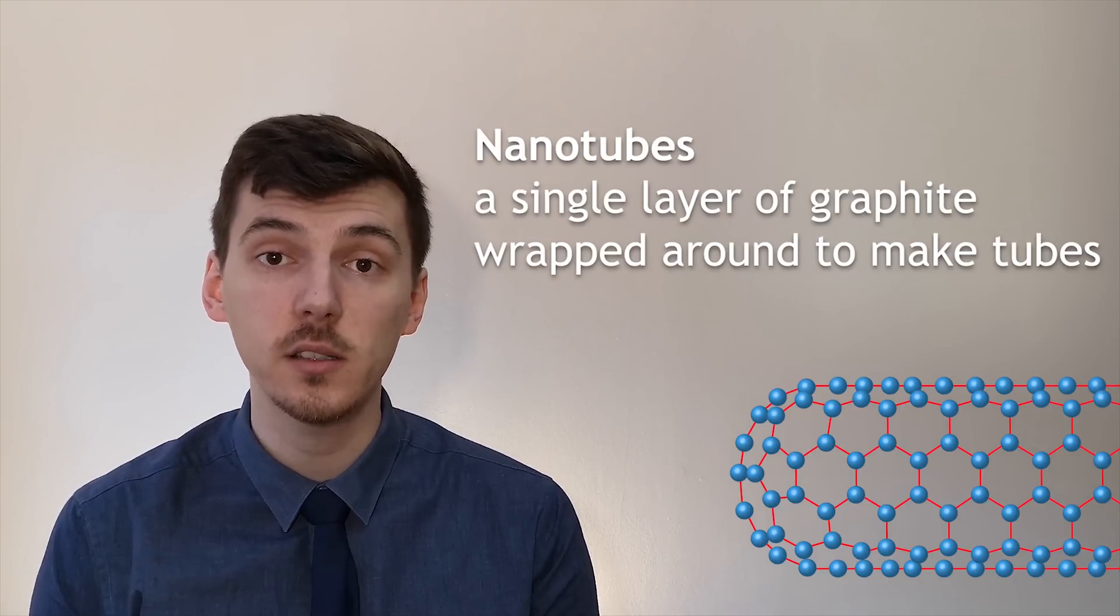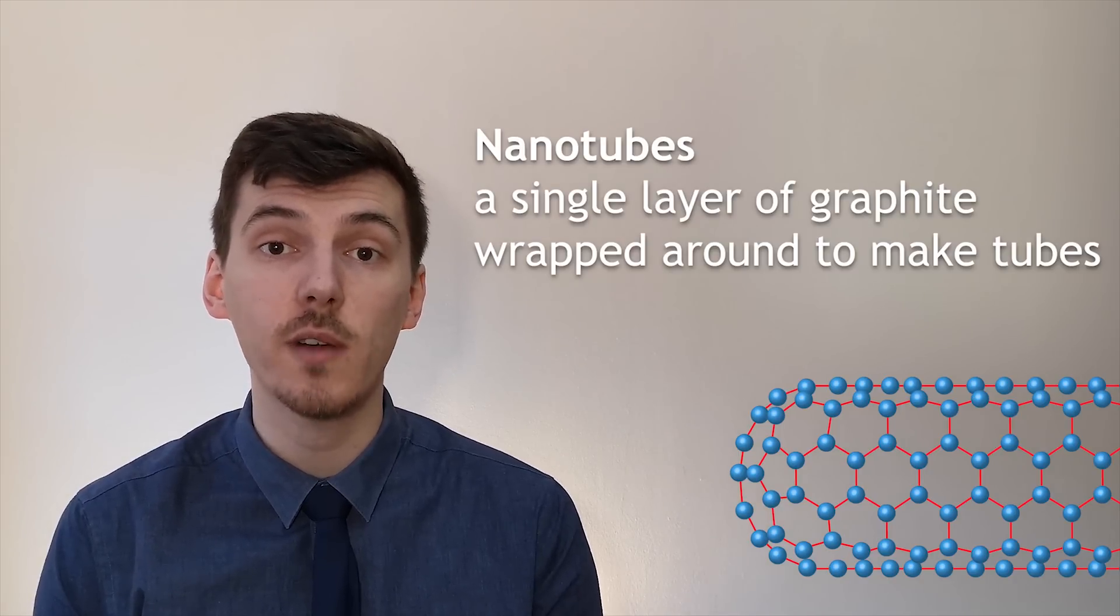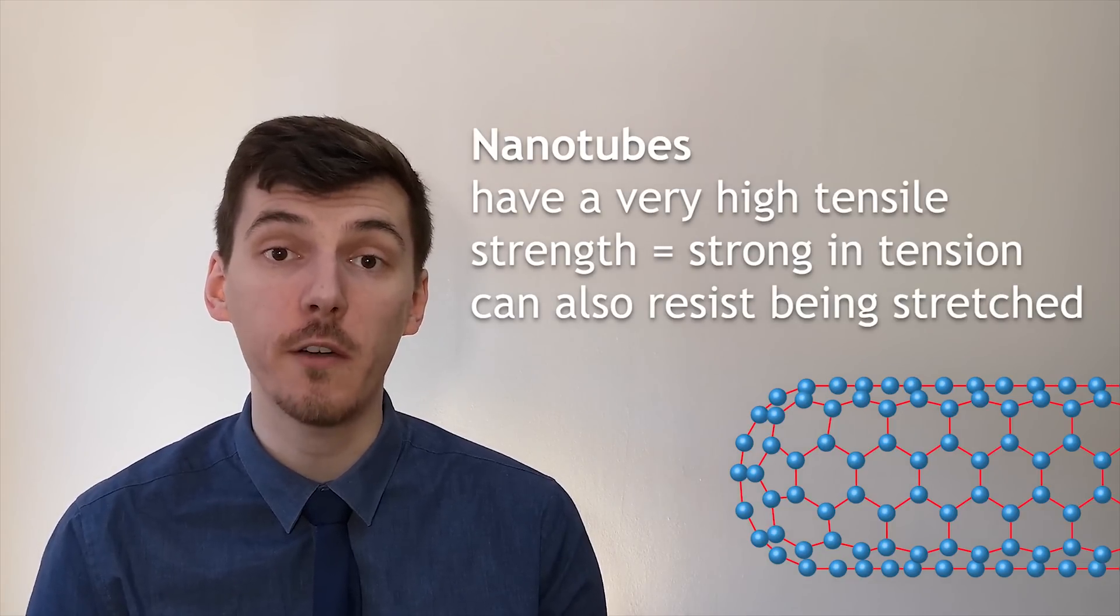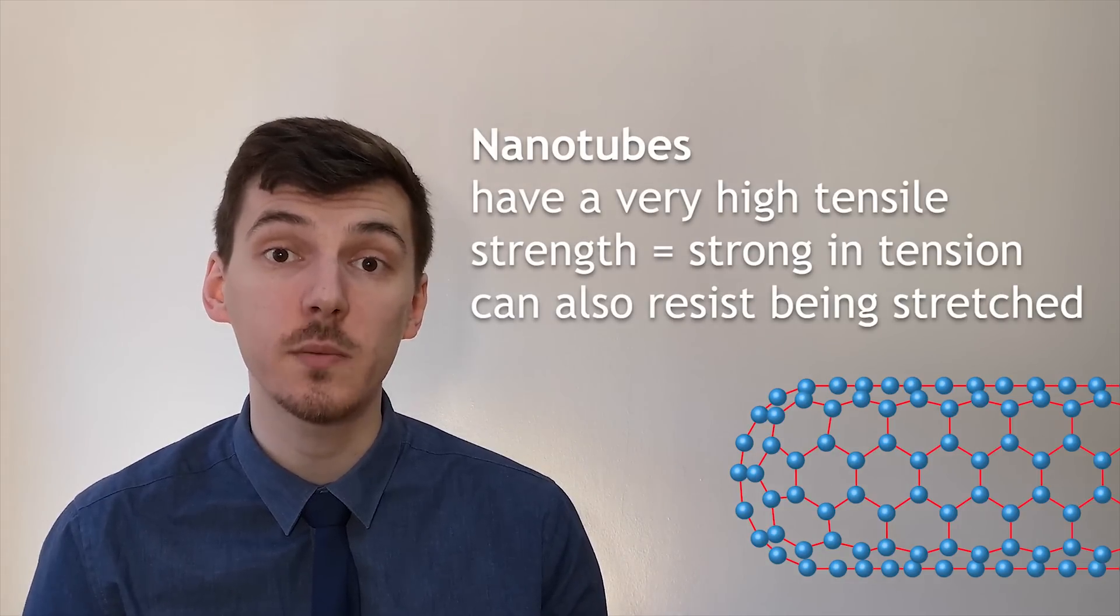Nanotubes, which are a single layer of graphite, or graphene, which has been wrapped around to make a tube. Nanotubes have a very high tensile strength, which means they are very strong in tension and resist being stretched.